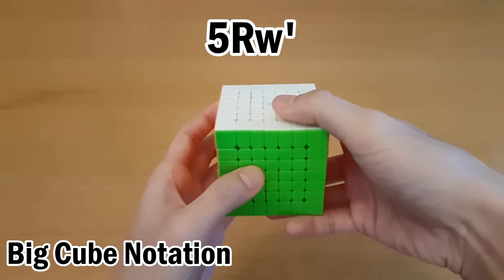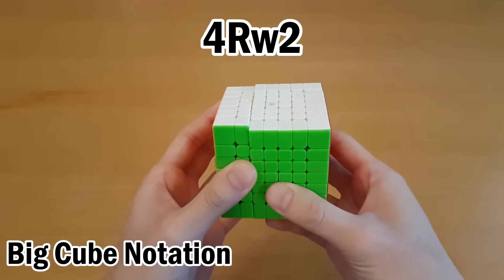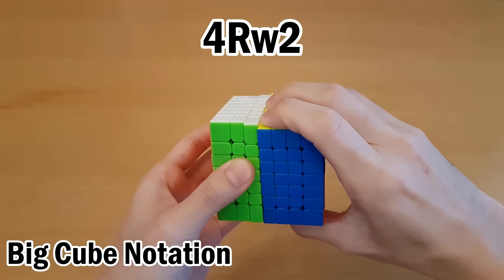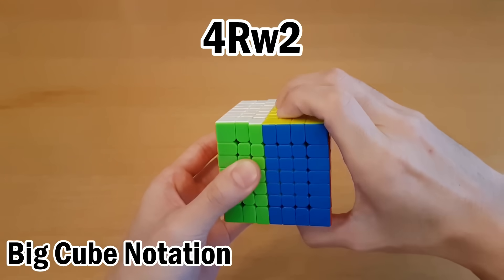And you can still put things at the end, so this would be 5Rw prime. Or for example, this one would be 4Rw 2. So the first number tells you how many layers to move, the second number tells you how much to move it.